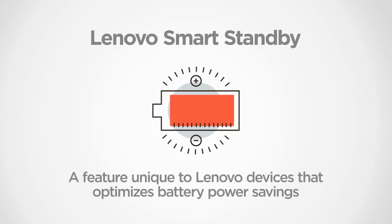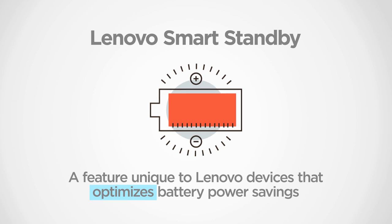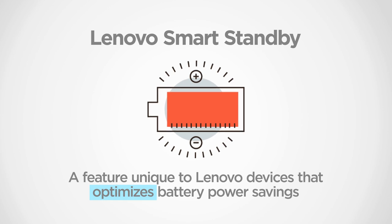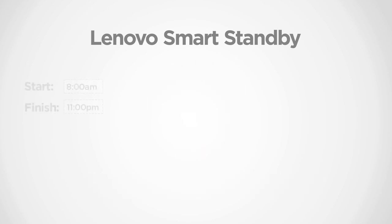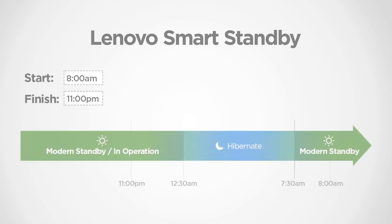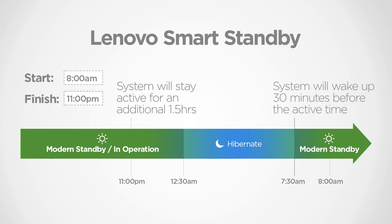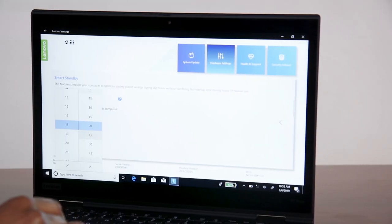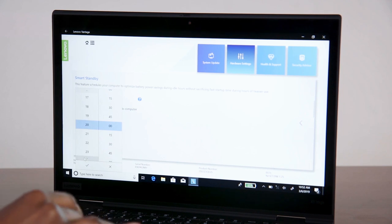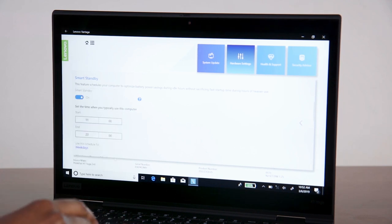The Lenovo Smart Standby feature is unique to Lenovo devices and allows a customer to optimize battery power savings during the user's regular idle working hours, without sacrificing fast start-up times during hours of heavier use. Smart Standby does this by putting the laptop in hibernation mode during idle hours set by the user. Thirty minutes before the user has specified that they would typically use the computer, the computer wakes up and places itself in Windows 10 Modern Standby mode. The user can use Lenovo Vantage to manage Smart Standby, including setting the idle times of their laptop.